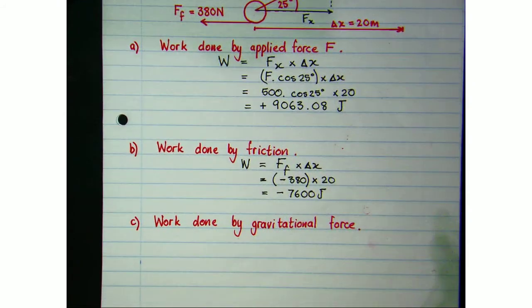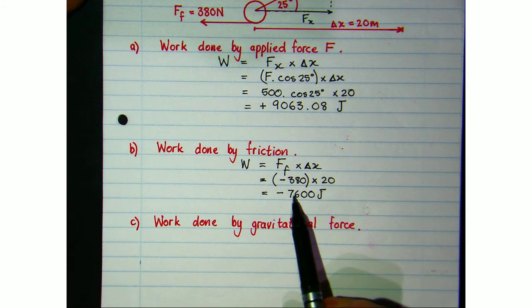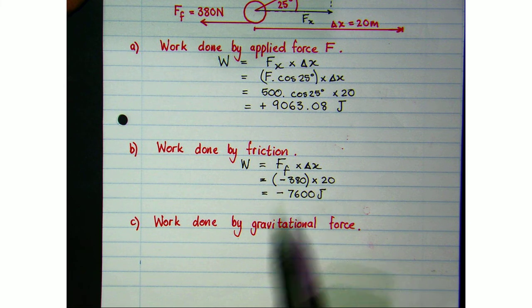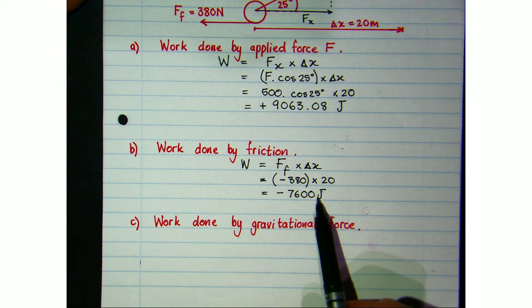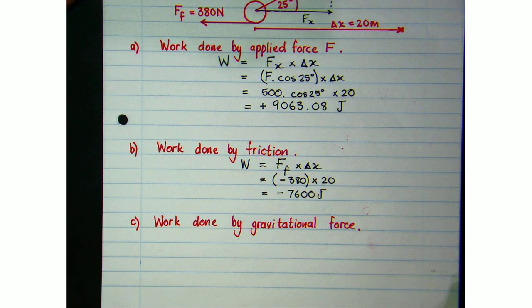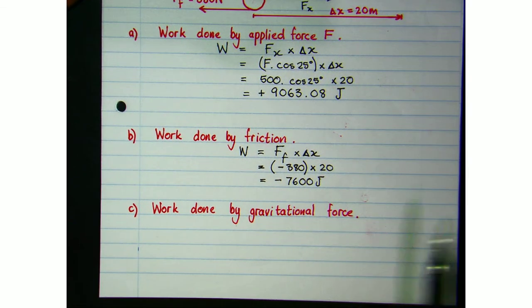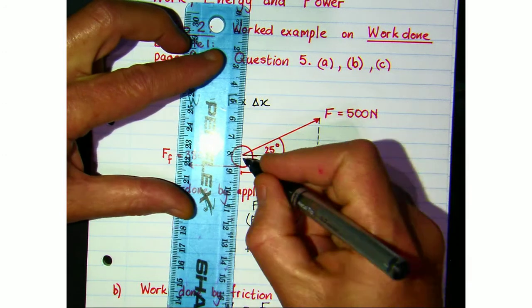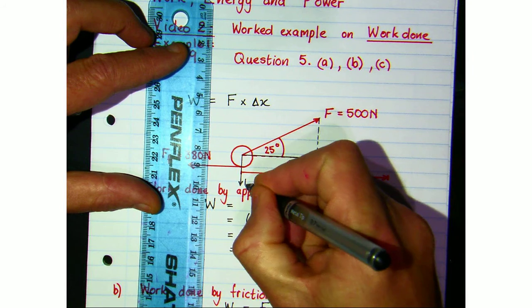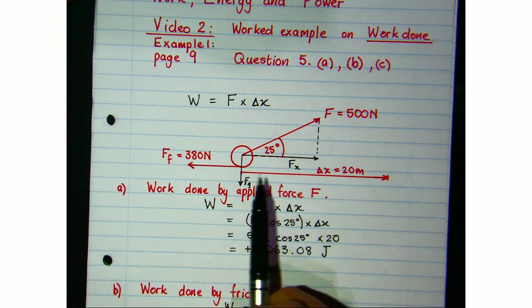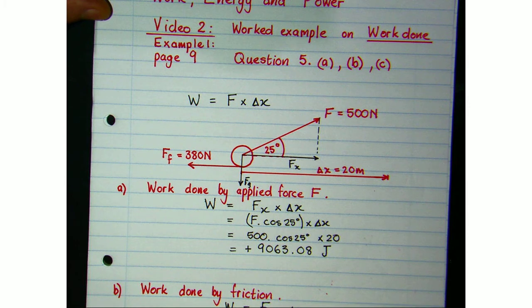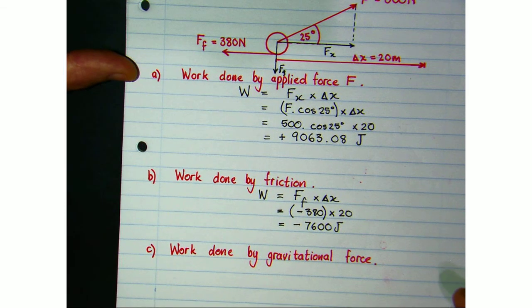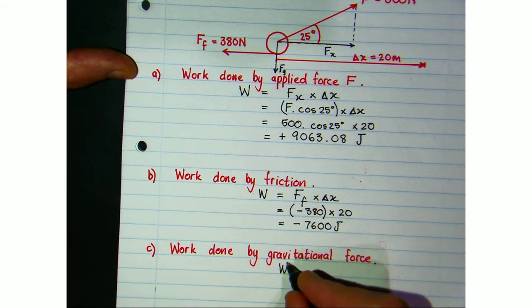Negative work being done means that as the roller moves to the right, 7600 joules of energy is being removed from the system and dissipated as heat and sound energy. The next part is to find the work done by the gravitational force. Looking back at our diagram, the gravitational force acts perpendicular to the displacement, so it doesn't have a component in the direction of the displacement. Therefore, the work done by the gravitational force is zero.